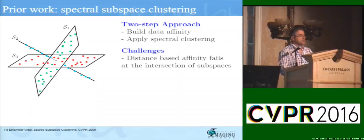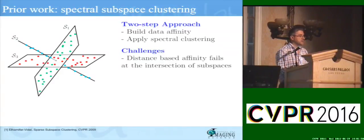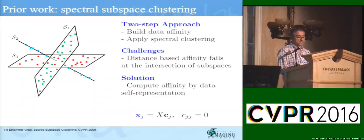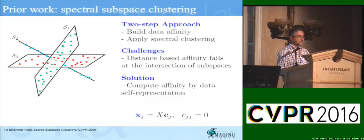However, the key challenge is how do you go about building an affinity matrix that is really good. The reason being that if you do it based on distance, it's not going to work because you can have all of these points near the intersection that are close to each other but they're in different classes. So the question is how do you build an affinity that really exploits this multi-subspace structure?